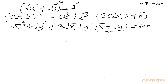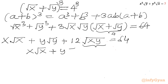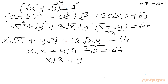Now root x plus root y is 4. Root x cubed is root x times root x times root x, so it gives us x times root x. Similarly root y cubed gives y times root y. So x root x plus y root y plus 3 times root xy times 4 equals 64. Root xy is 1, so this becomes x root x plus y root y plus 12 equals 64. Therefore x root x plus y root y equals 52.